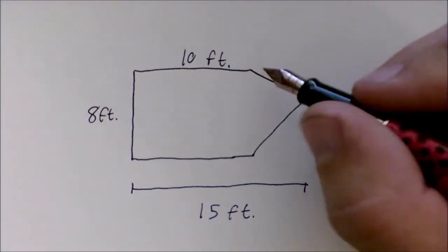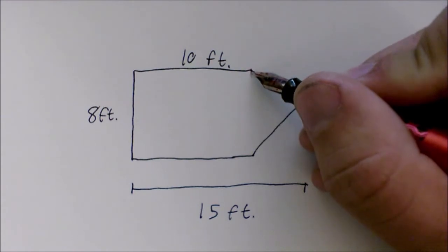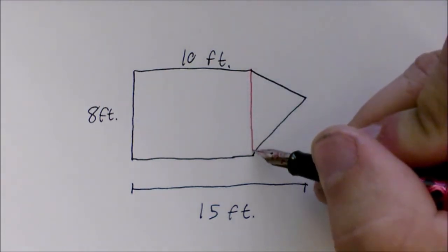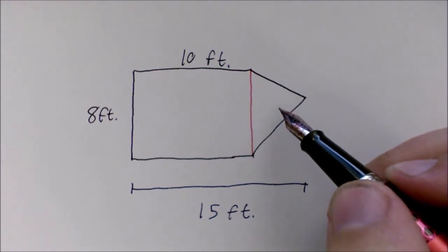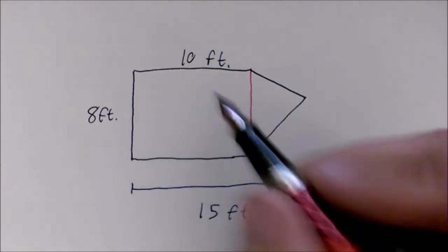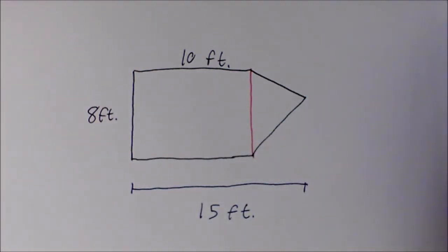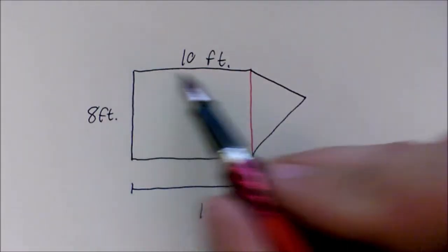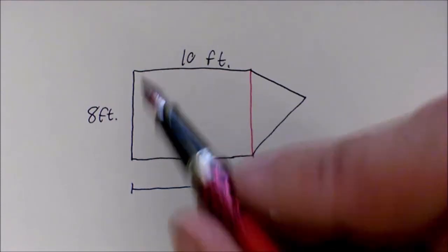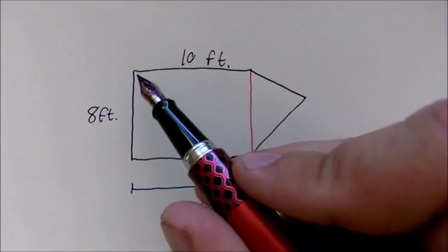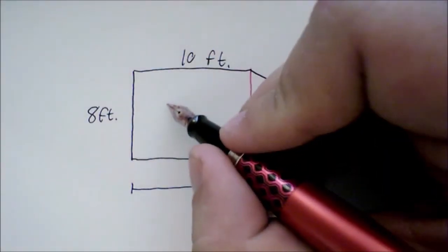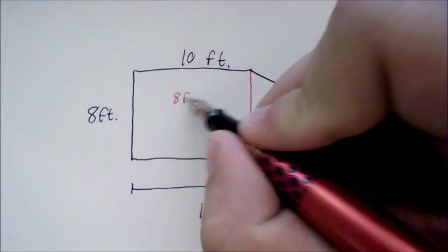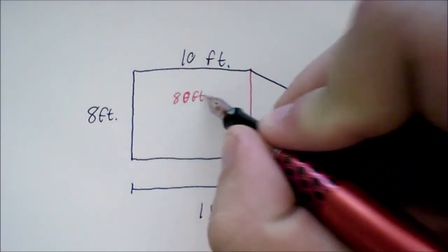Another way would be to draw a vertical line to separate our rectangle and triangle. Right away, we do have enough information to find the area of our rectangle. The rectangle has a base of 10 feet and a height of 8 feet. To find the area, we will do 10 times 8, which gives us an area of 80 feet squared.